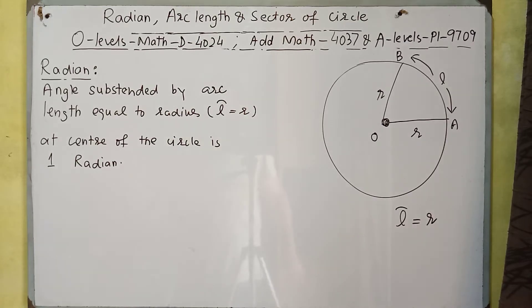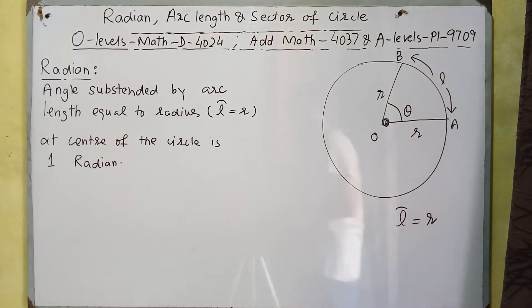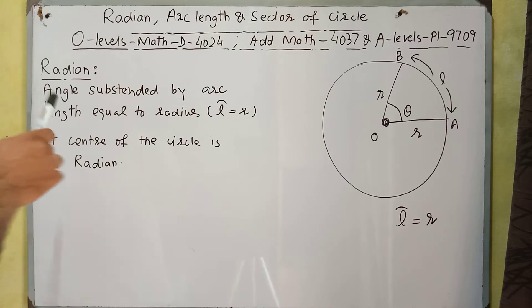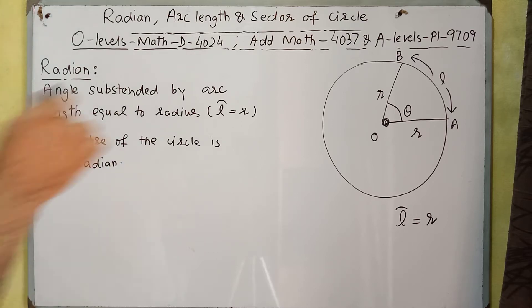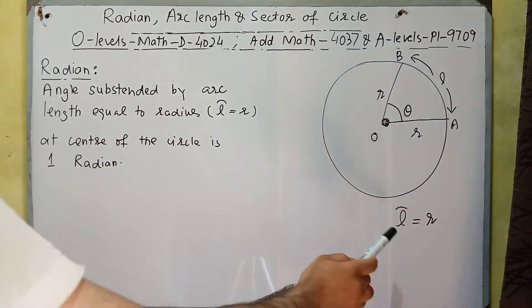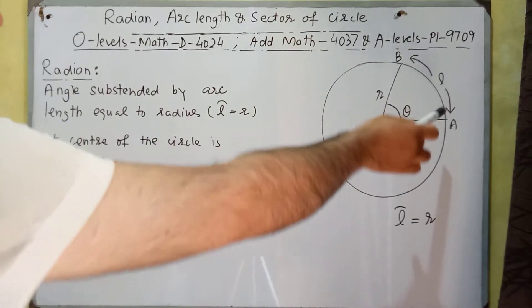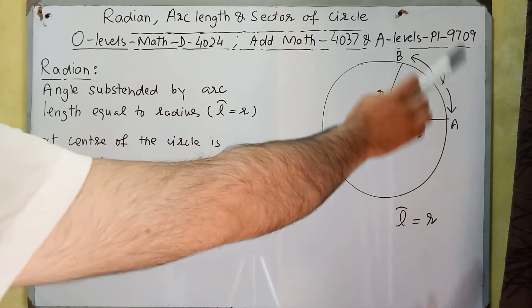In this video we will study about radian, arc length, and sector of a circle. Usually we measure angles in degrees, but we have another unit of measurement called radian. A radian is the angle subtended by an arc length equal to the radius of the circle. In this circle, arc length AB is denoted by l, and this arc length is approximately equal to the radius r.